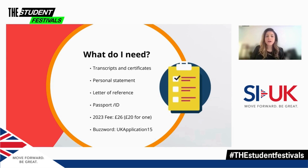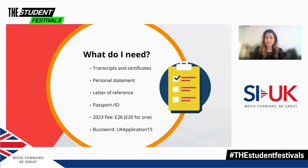You'll also need a valid passport and ID. Apart from these things, you also need to prepare a small fee for the UCAS application, which is £26 for the whole set of five applications or £20 for just one application. If you submit your application past the UCAS deadlines or outside of their designated deadlines, then the fees may slightly vary.